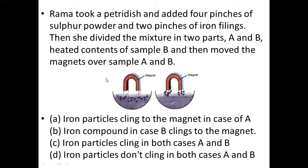Hritya Sharma, row number 29. Rama took a petri dish and added four pinches of sulphur powder and two pinches of iron filings, then divided the mixture into two parts A and B. She heated contents of sample B and moved a magnet over samples A and B. Iron particles cling to the magnet in case A. Iron compound in case B clings to the magnet. Iron particles cling in both A and B. Iron particles don't cling in both A and B. The correct option is A — iron particles cling to the magnet in case A.